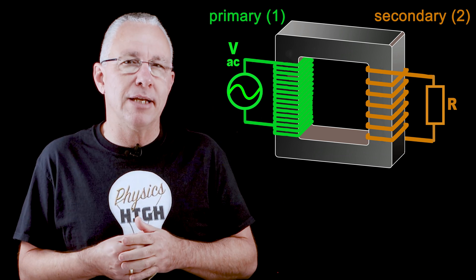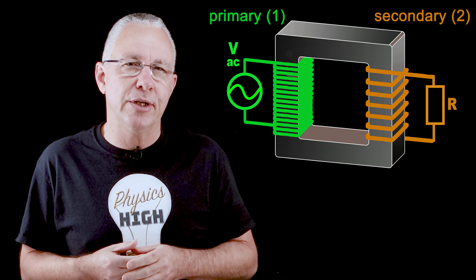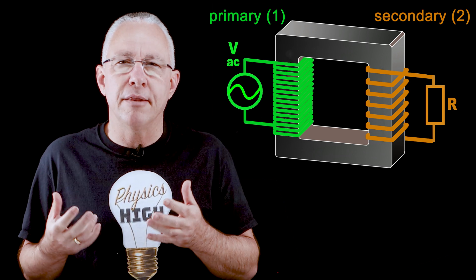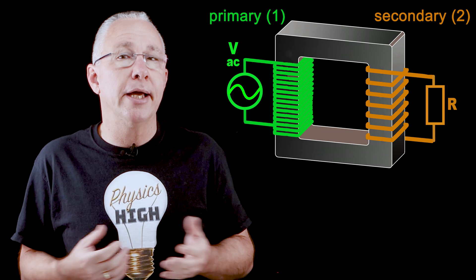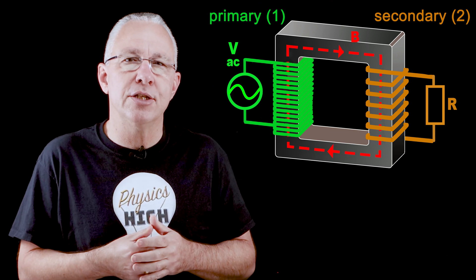Energy is lost due to incomplete flux linkage. Not all the magnetic field lines pass through the secondary coil to generate the EMF. Now this is addressed by using an iron core, which is shown, which increases the flux linkage.